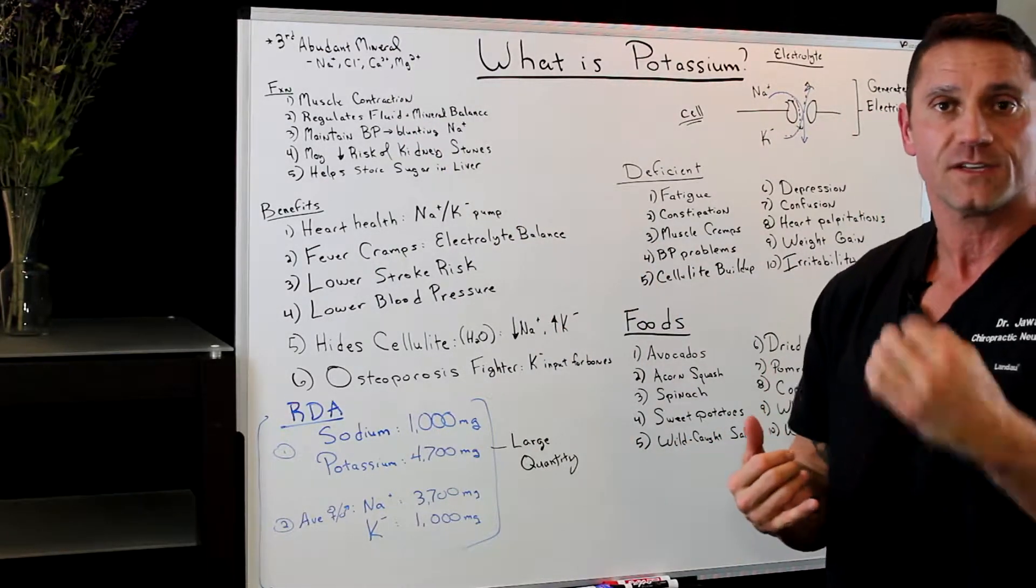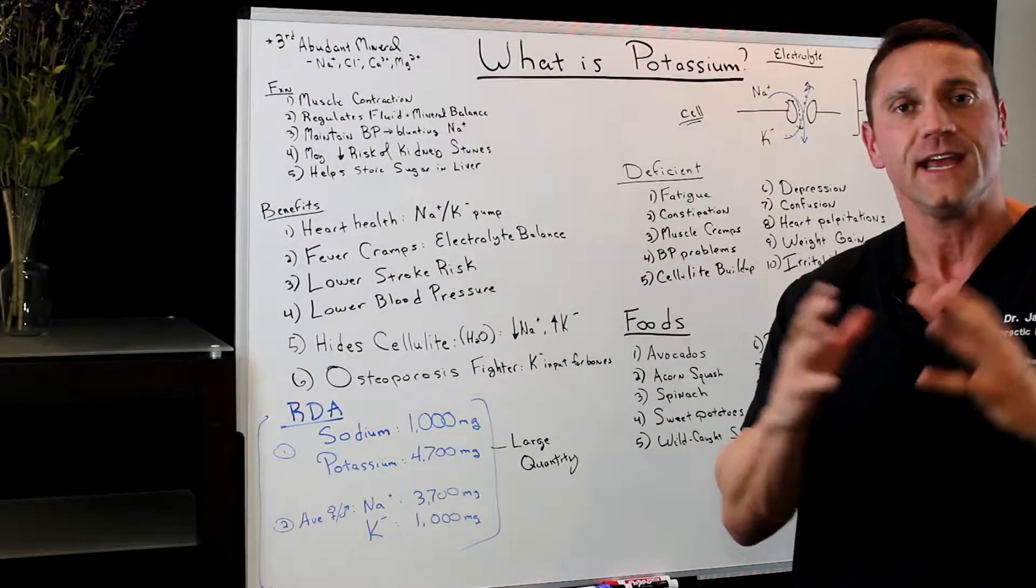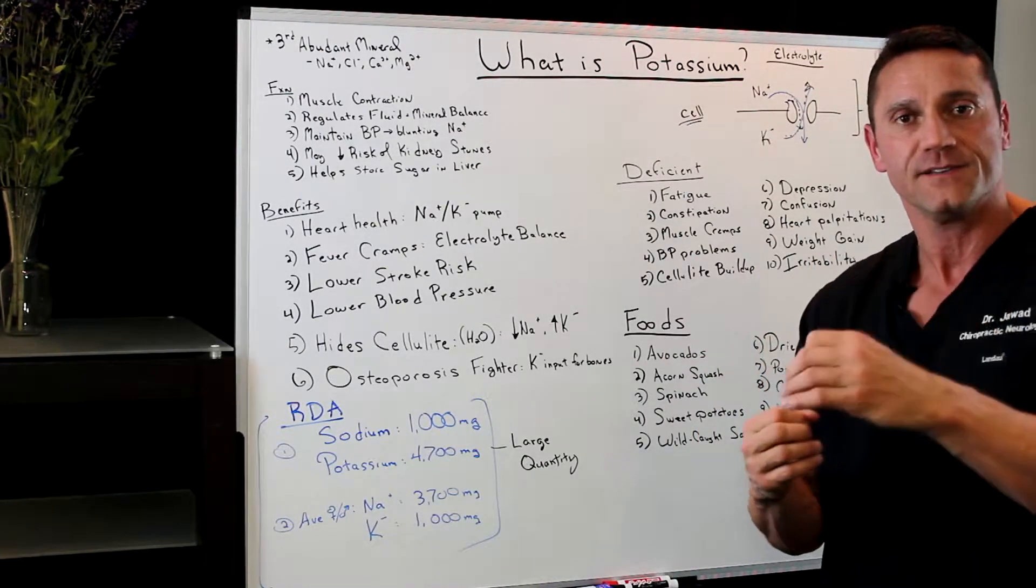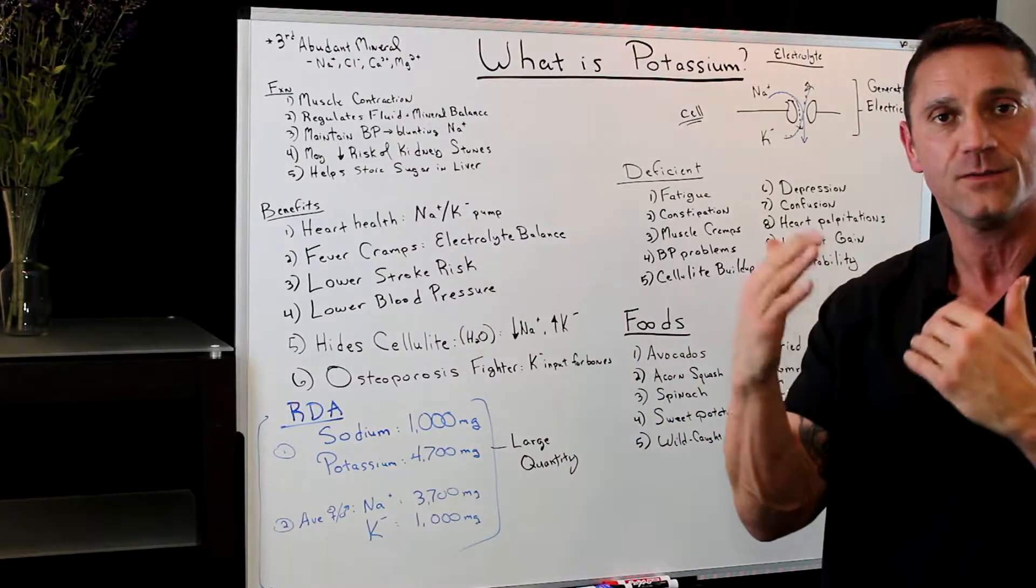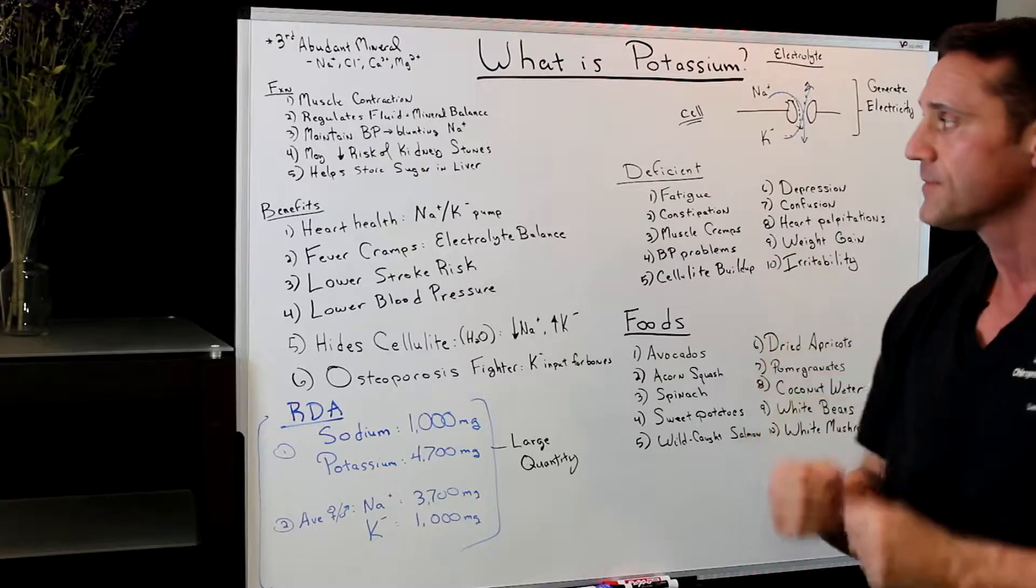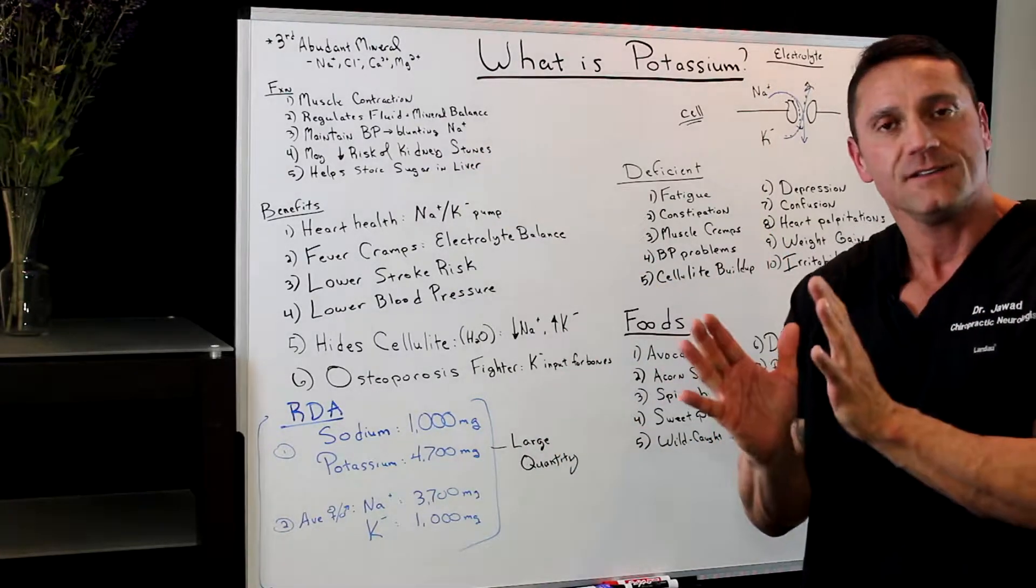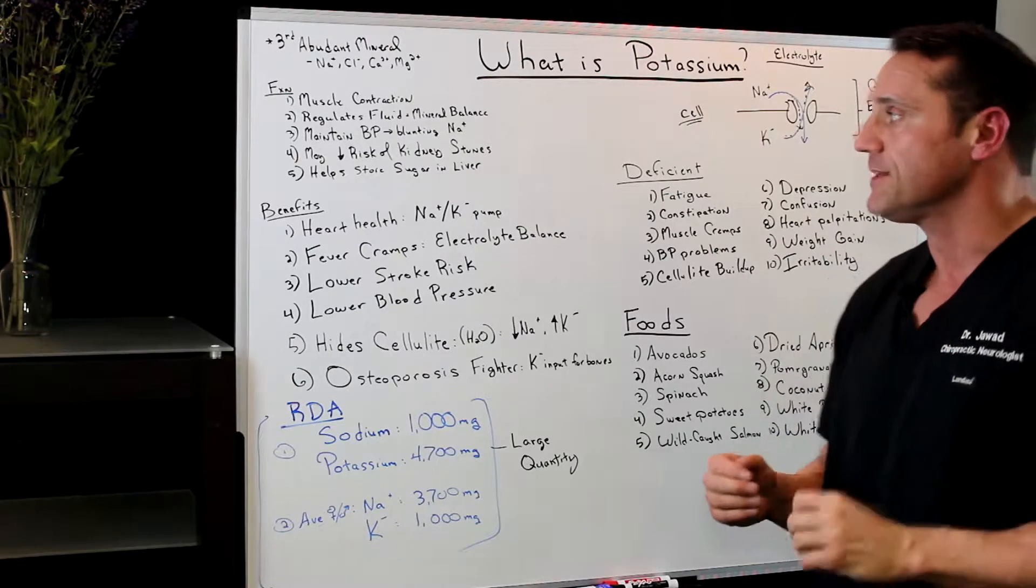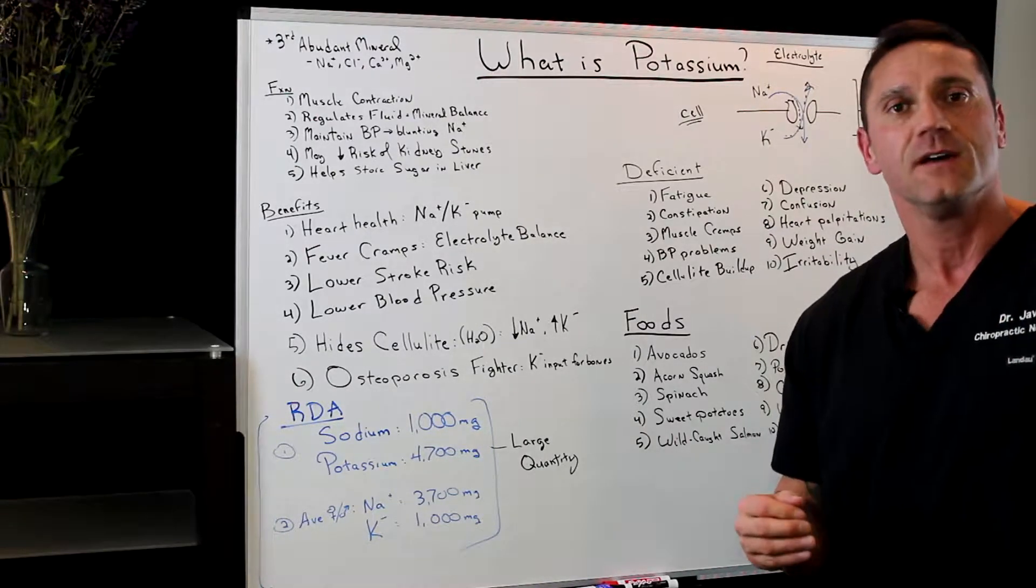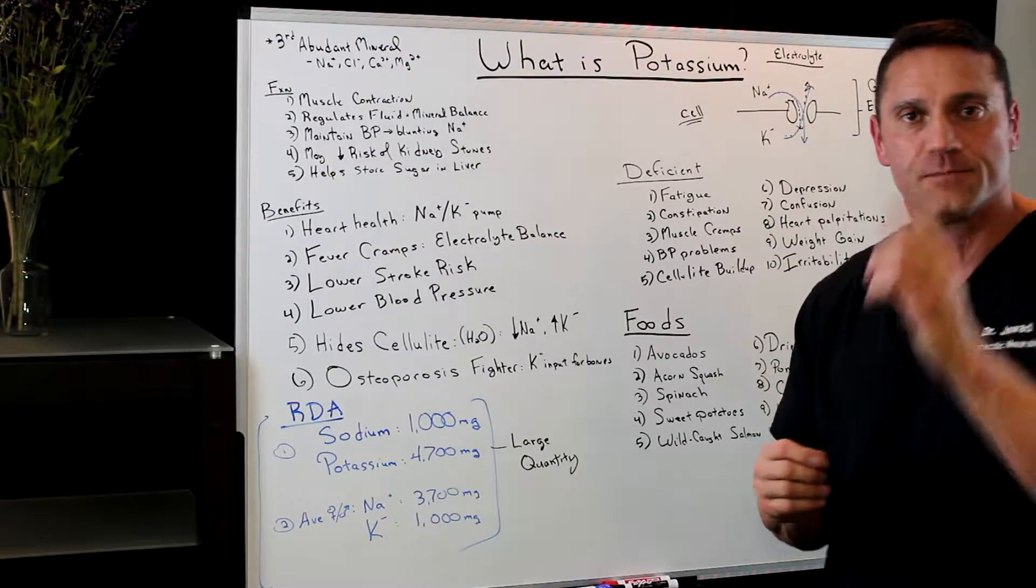Number one, involved in muscle contraction. Number two, it helps regulate fluid and mineral balance. Because potassium is the third abundant mineral, it helps regulate the fluid and the mineral balance in our system. It helps maintain blood pressure. Potassium is a wonderful way of actually lowering blood pressure naturally because it helps blunt sodium. It helps get sodium out of the system, and I'll explain in a minute.